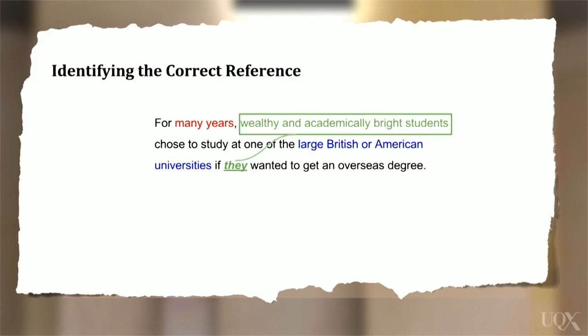If you said 'wealthy and academically bright students', you are correct. To check your answer, try to put this phrase in the place of 'they' and see if it makes sense. Who or what wanted to get an overseas degree? 'Many years wanted to get an overseas degree?' No. 'Large British or American universities wanted to get a degree?' No, that's not right. People want to get degrees from universities. 'Wealthy and academically bright students wanted to get an overseas degree.' Yes, that makes sense.